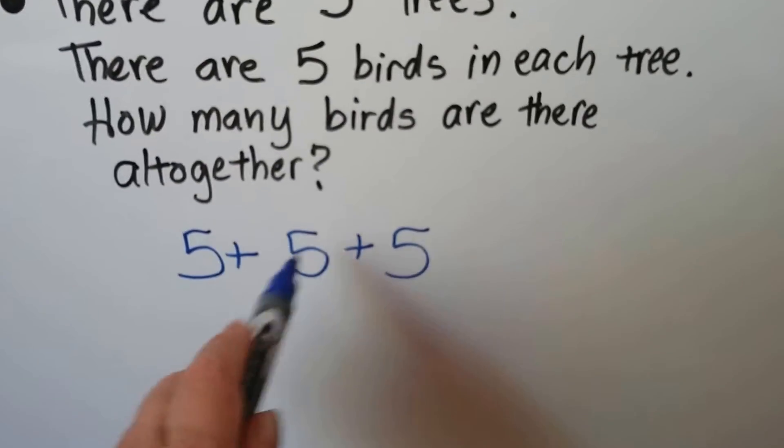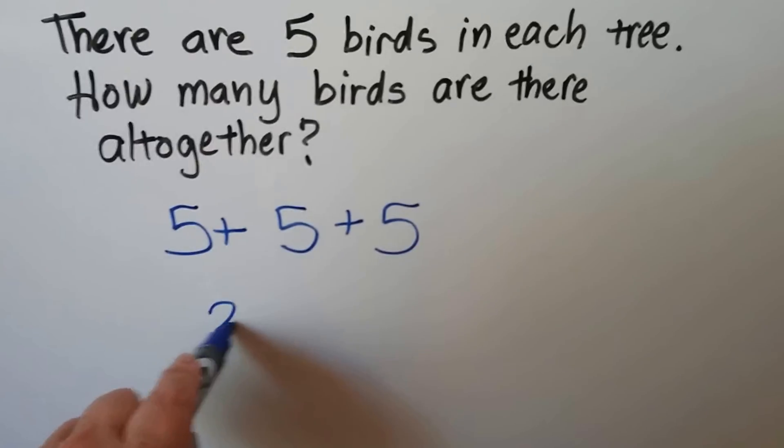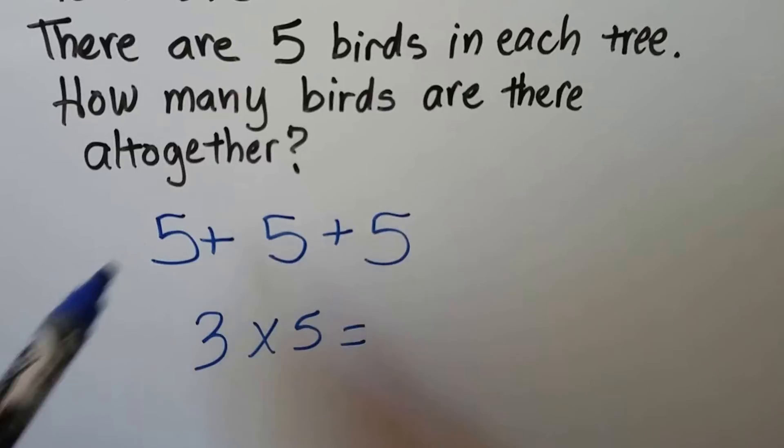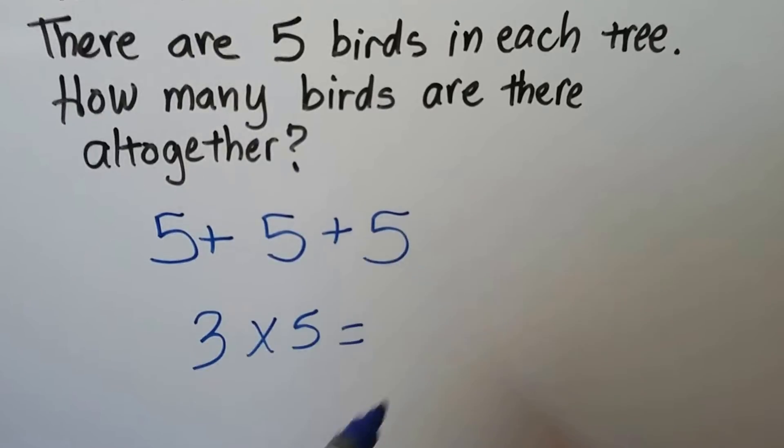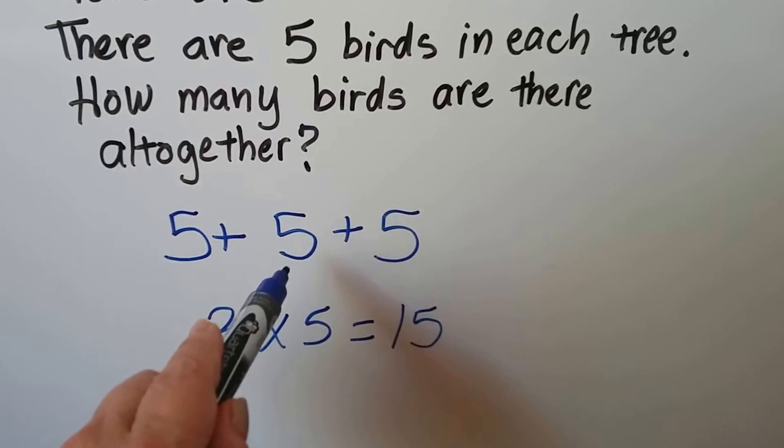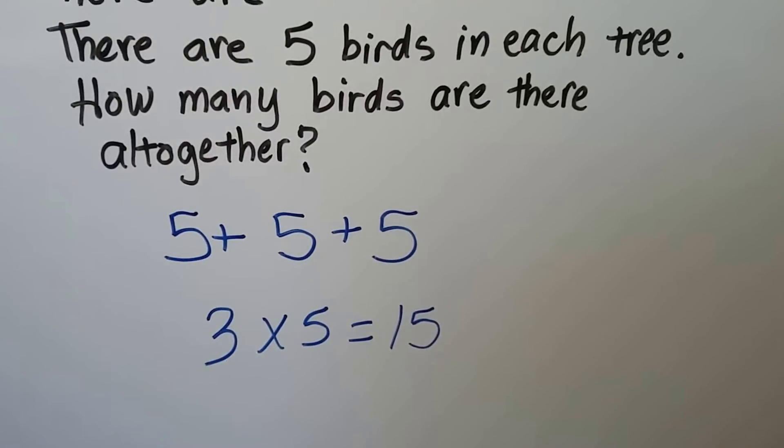It's the same thing as having three fives. We have three times five. We can skip count by 5: 5, 10, 15. Or we can just do 5 plus 5 is 10, plus 5 more is 15.